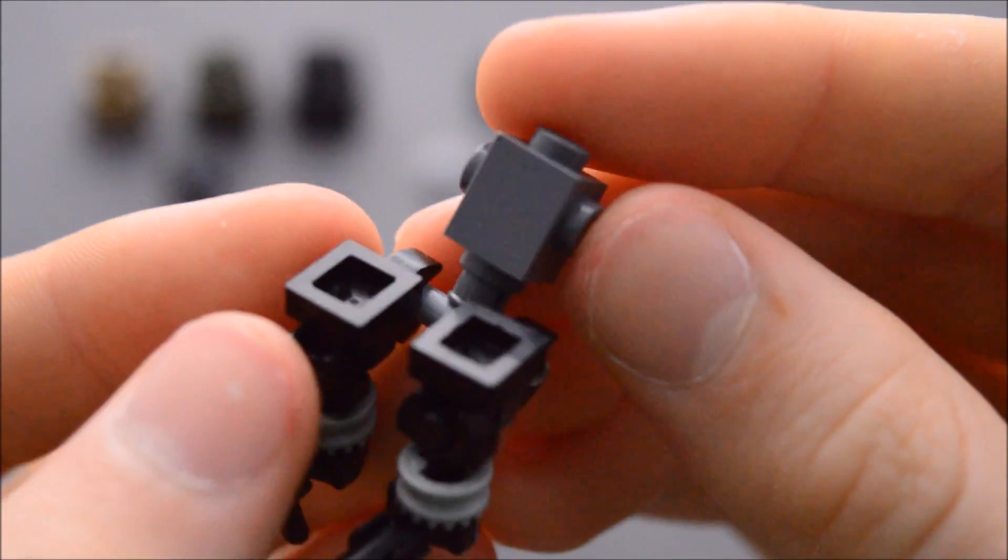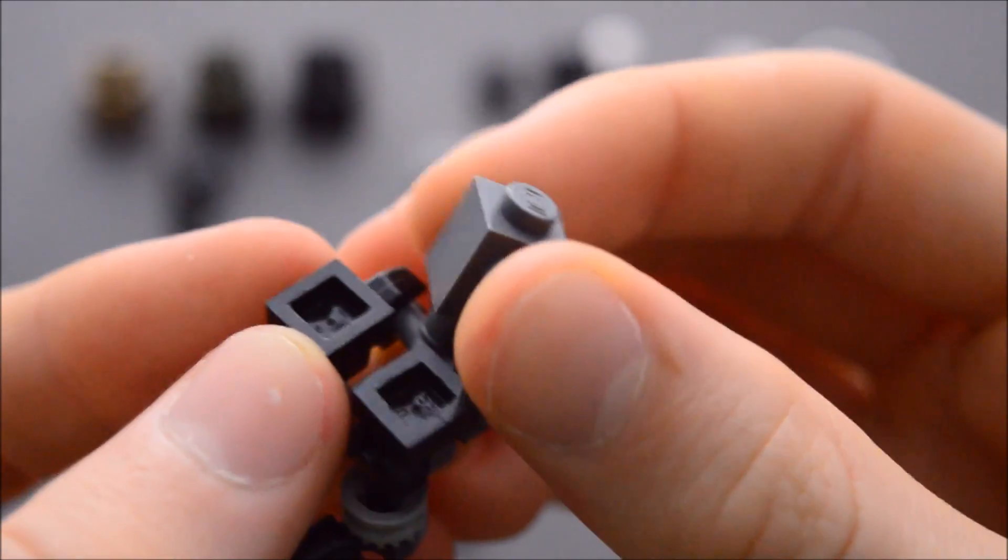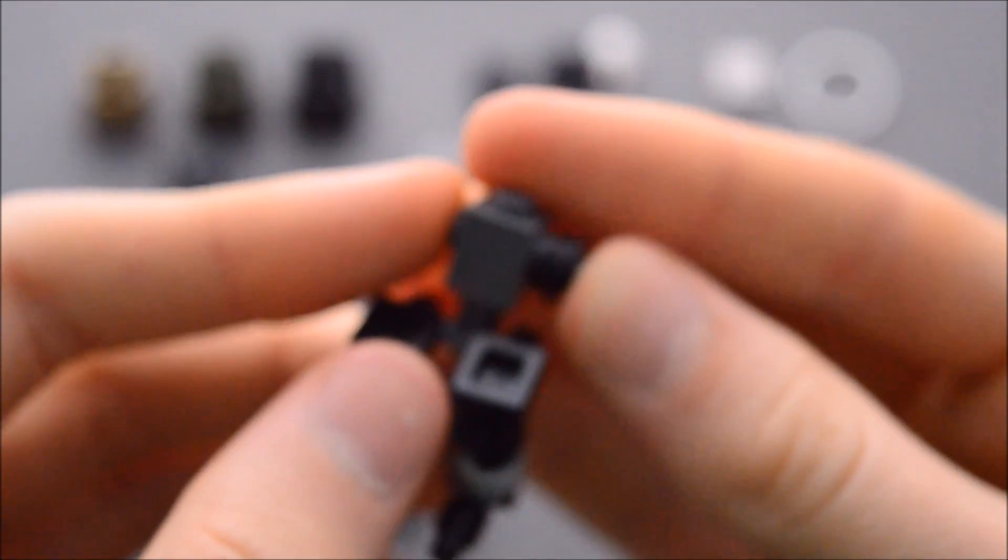And then we're going to attach that there. Then this will make up the torso of the robot and put that right inside there. This allows you to have a torso that can swivel and move around like that.